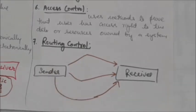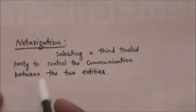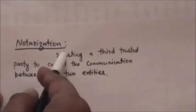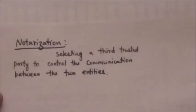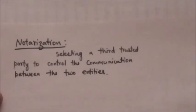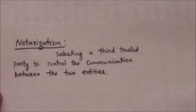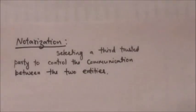The next mechanism is notarization. Notarization means selecting a trusted third party to control the communication between two entities. This can be done, for example, to prevent repudiation — the receiver can involve a trusted party to store the sender's request in order to prevent the sender from later denying that they made such a request.